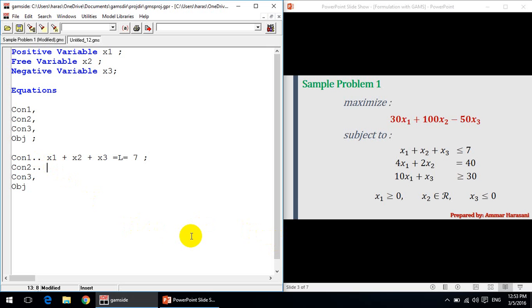Same thing for constraint 2, we assign it. 4 times x1 plus 2 times x2. In multiplication, we should write this multiplication sign. Equal E equal to 40. Let's go to the third constraint, which is 10 times x1 plus x3. And it's G equal 30.